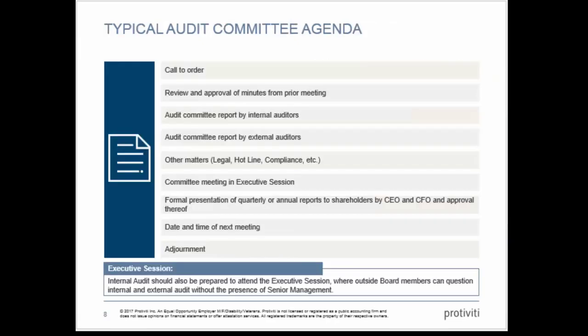The typical audit committee agenda is pretty universal: call to order, review of the minutes, internal and external audit, legal, hotline, compliance, executive sessions, formal presentations by the CFO or controller covering 10-K and 10-Q, and date and time of the next meeting. One of the most important items is the executive session. We see a mix — some do it regularly, some as needed, and unfortunately some don't do it at all. I would recommend getting in the practice of having them, even if you have nothing to say, so that if you ever really need one, it doesn't raise red flags.